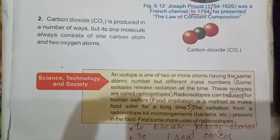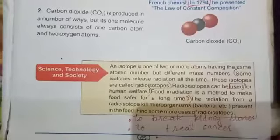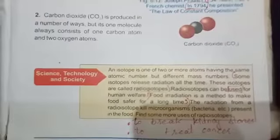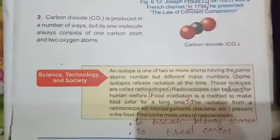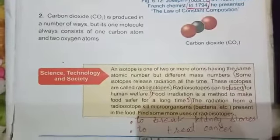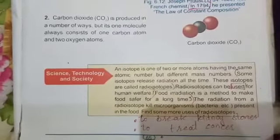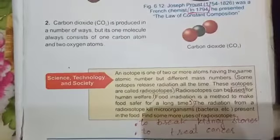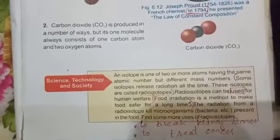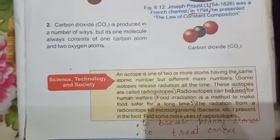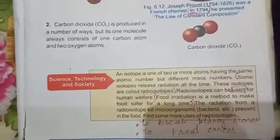We have studied about isotopes, which are atoms having the same atomic number but different mass number, due to having different numbers of neutrons in their nucleus. Those isotopes which emit radiation are called radioisotopes.